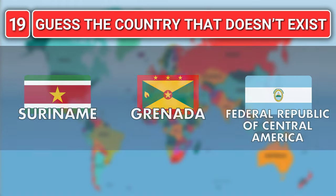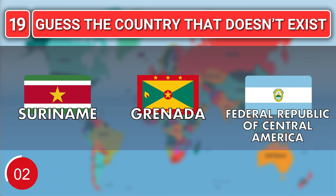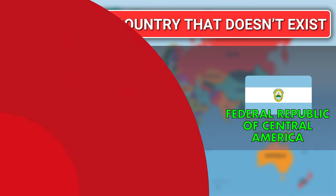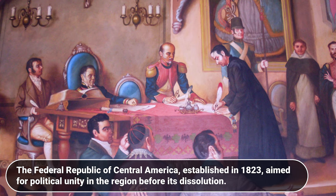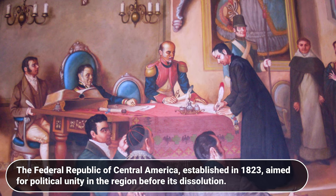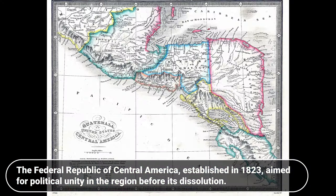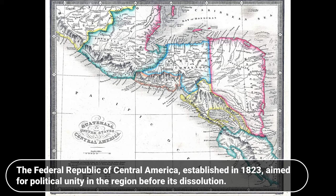Which one does not exist? Suriname, Granada or Federal Republic of Central America? The answer is Federal Republic of Central America. The Federal Republic of Central America, established in 1823, aimed for political unity in the region before its dissolution.